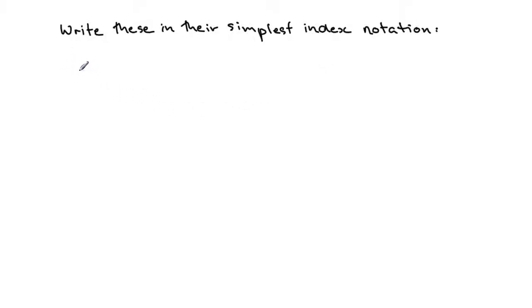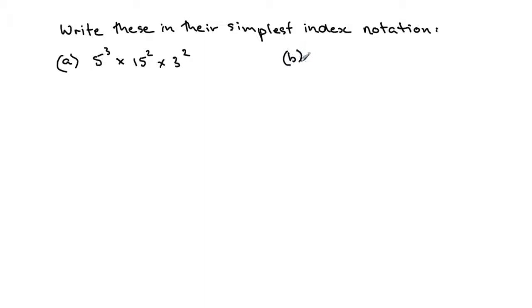I recently had a request to help with answering two questions. The first was: write these in the simplest index notation — 5 cubed times 15 squared times 3 squared. The other one was 20 to the power of 5 times 8 to the power of 4 times 125. My understanding of simplest index notation is to write each number as powers of prime numbers and then collect them if they have the same base.